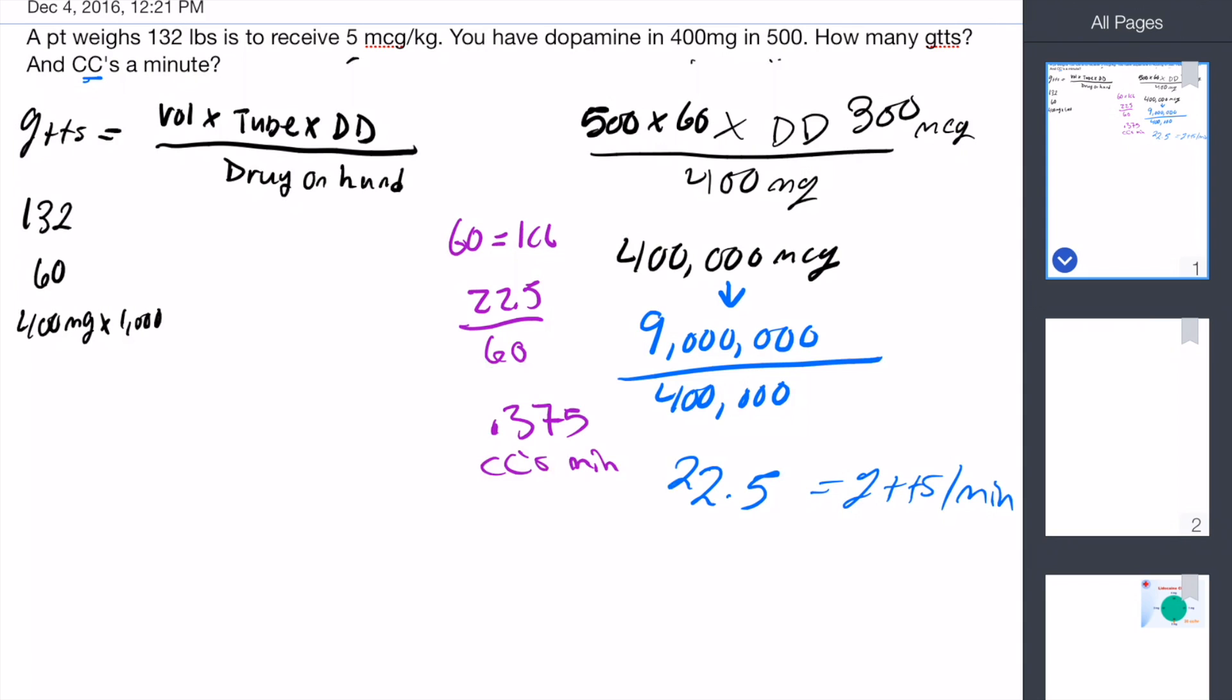Now this all looks kind of crazy and complicated because it is. We're doing it the long way. Some people will dose down the concentration, so we'll refer to this bottom number as concentration and we'll leave this as a 1. I'll show you what I mean by that.